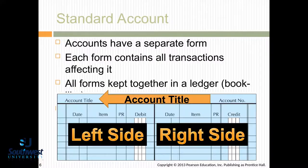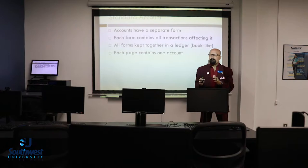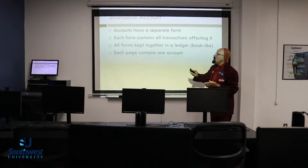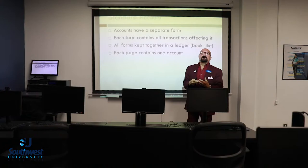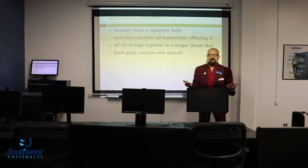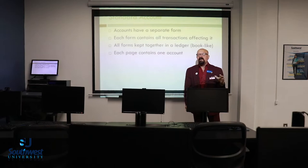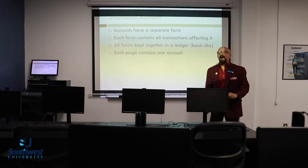Accounts have a separate form, and each form contains all transactions affecting it. Everything in the cash account is going to be on a separate form — you'll know the money coming in and going out. All forms are kept together in a ledger, which is book-like. Nowadays most people are computerized, but it's still a ledger. Each page contains one account: cash, accounts receivable, accounts payable, revenues, and all your expenses itemized — from salaries all the way down to utilities expense.